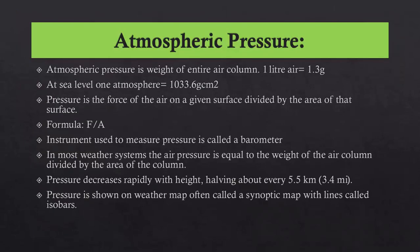Number one is atmospheric pressure. Atmospheric pressure is the weight of the entire air column. One liter of air is equal to 1.3 grams. At sea level, one atmosphere is 10,033.6 gram per cubic centimeter. Pressure is the force of the air on a given surface divided by the area of that surface — the formula is force upon area. The instrument used to measure pressure is called a barometer. Pressure decreases rapidly with height, halving about every 5.5 kilometers.